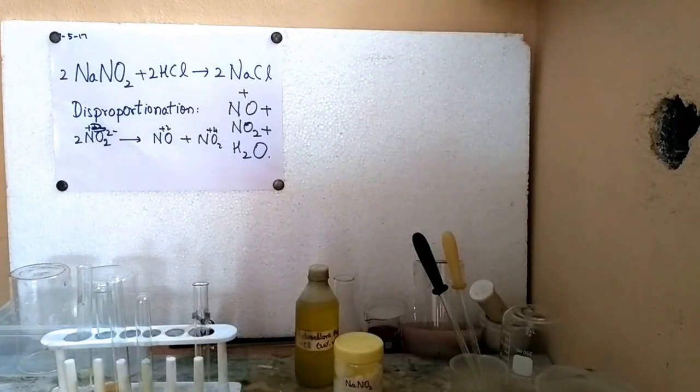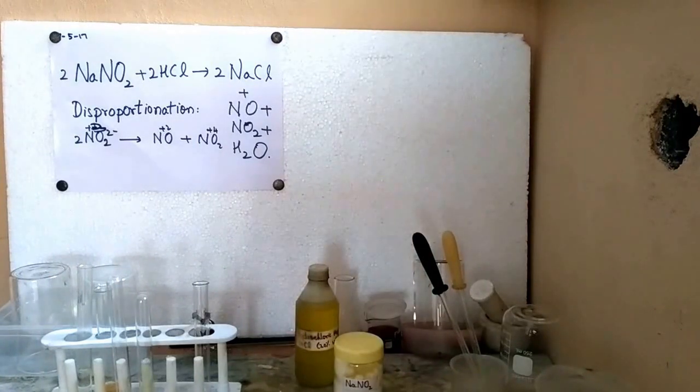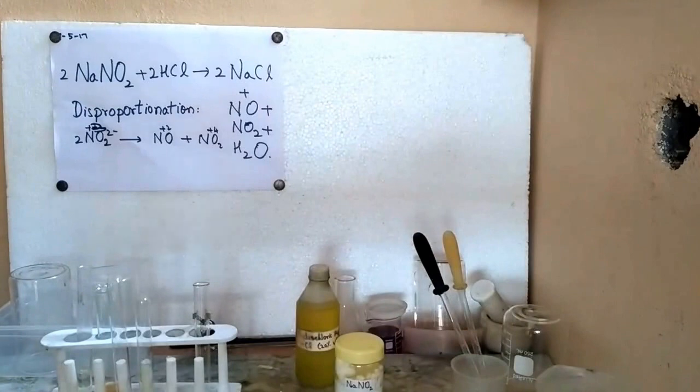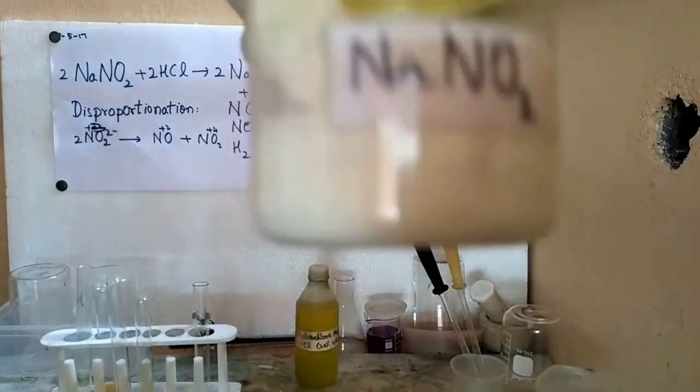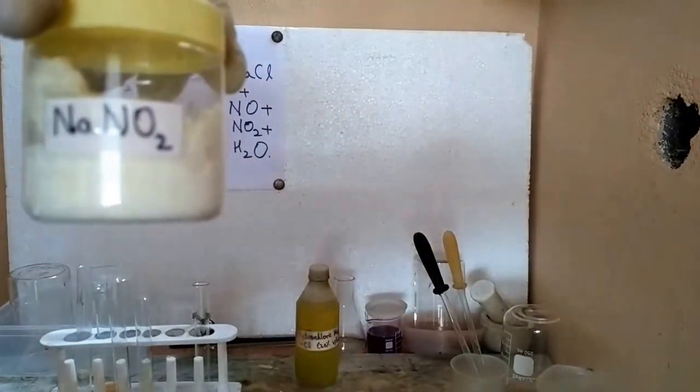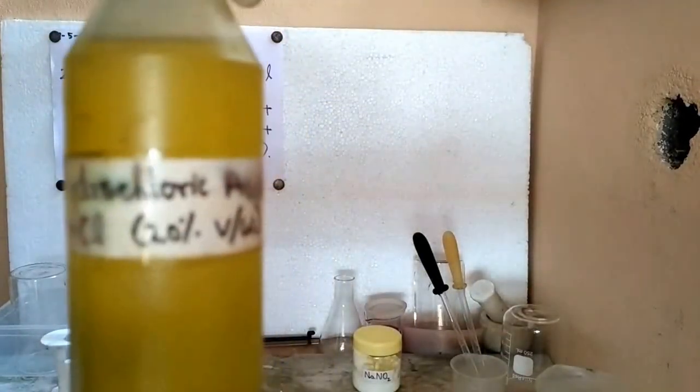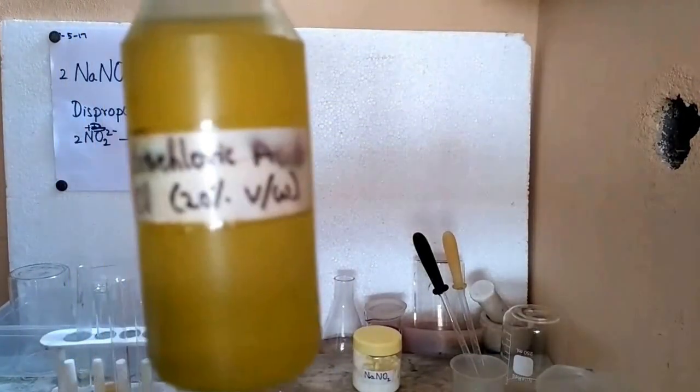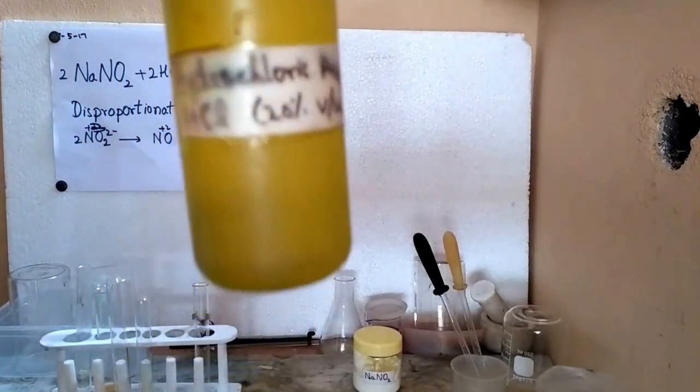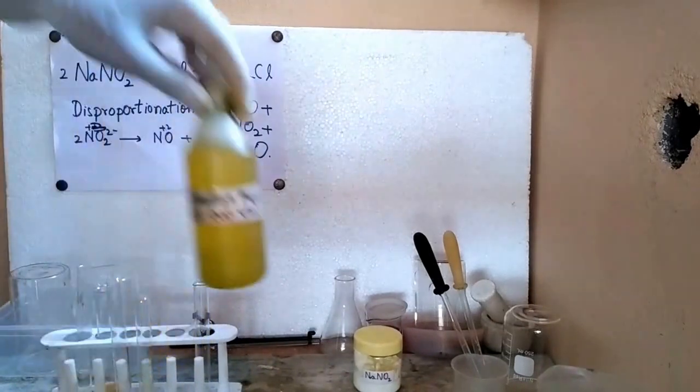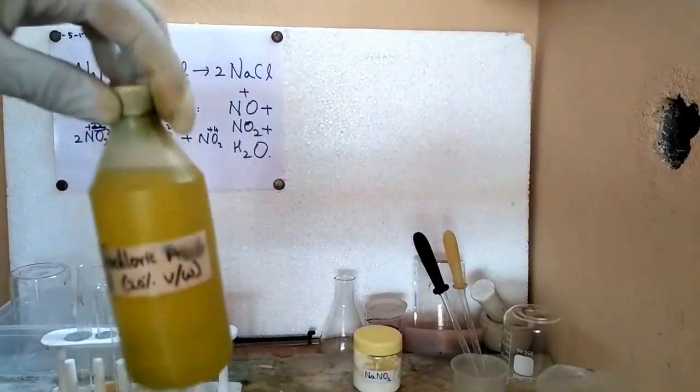Hi guys, in this video I would be reacting some sodium nitrite with some hydrochloric acid. All that we need for this reaction is some sodium nitrite which is NaNO2 and some hydrochloric acid. This hydrochloric acid is yellow color because this is commercially available hydrochloric acid, so it has some dyes added into it. Pure hydrochloric acid is colorless.